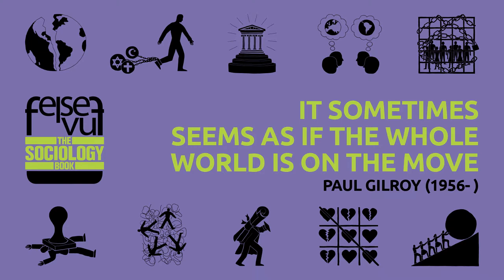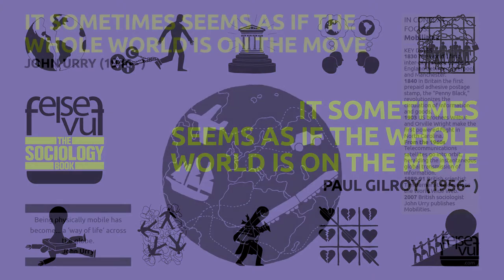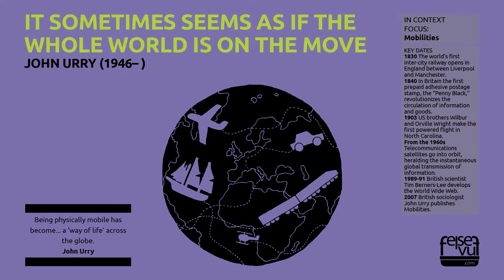It sometimes seems as if the whole world is on the move. John Urry, 1946. Since the 17th century, new technologies have been emerging that have enabled people, objects, and ideas to move around the world more easily than before. British sociologist John Urry advises that the consequences of this increase in global mobility demand that the social sciences develop a new paradigm for the study of how goods, people, and ideas circulate.